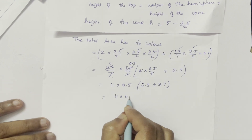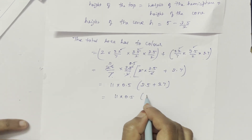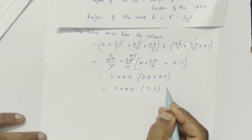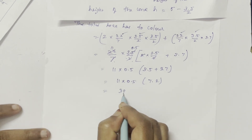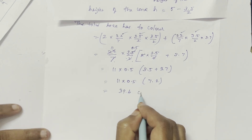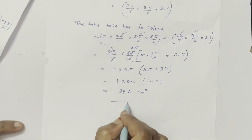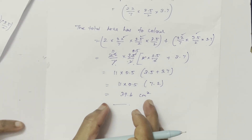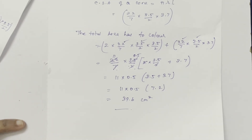So 11 × 0.5 × 7.2 equals 39.6 centimeters squared. The total area Raseed has to colour is 39.6 cm².